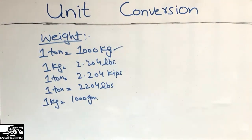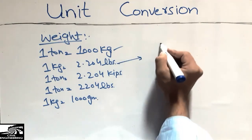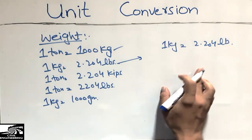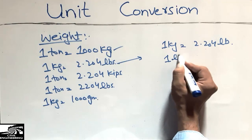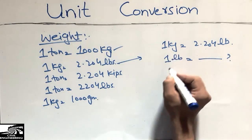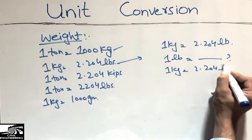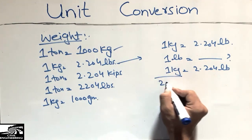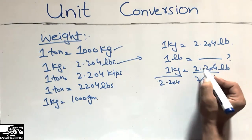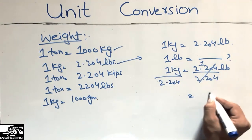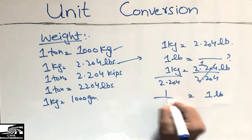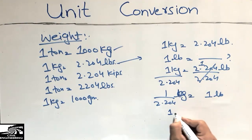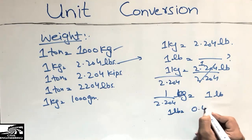Another example: one kilogram is 2.204 pounds. We want to know how many kilograms are in one pound. Dividing both sides by 2.204, we get one pound equals one divided by 2.204, which gives us one pound equals 0.45 kilograms.